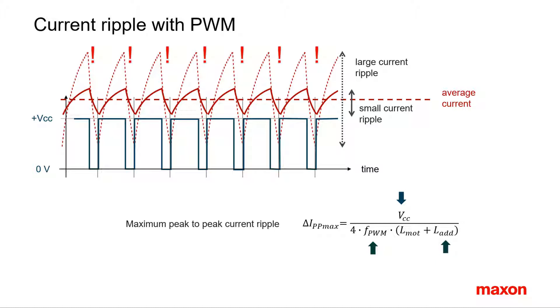Enhance the electrical time constant to dampen the current response. Place an additional inductance in the motor circuit. Maxon controls, for instance, have built-in motor chokes to compensate the low inductances of the coreless Maxon motor windings.